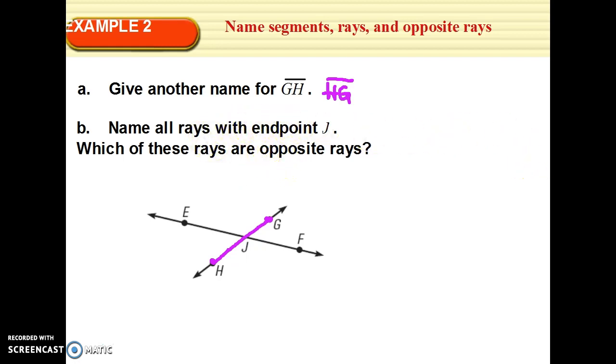Name all rays with end point J. A ray has an end point and it goes on forever in one direction. So, it's a portion of a line that only continues in one direction. It has an end point of J. So, here's J. This is an end point. What are the rays that I could have with an end point of J? Ray JE. Ray JG. And it always starts at the end point and it has your arrow. Ray JF. Ray JH.